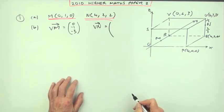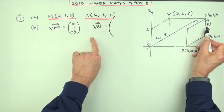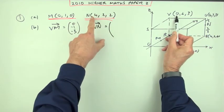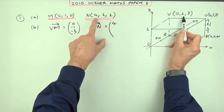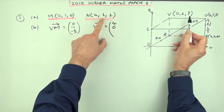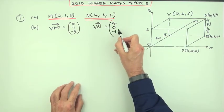Similarly for this one. How do you get from V to N? Well, starting at V, from zero to four is four along. From two to two is none back. And from three to two is one down.